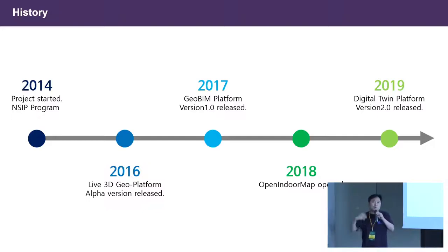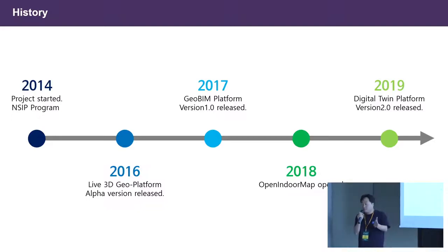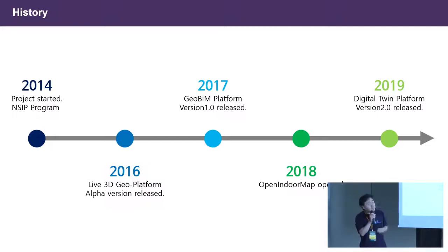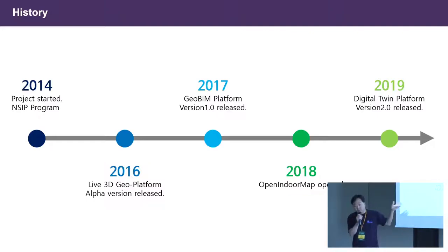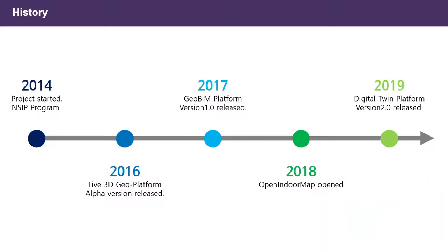The Korean government wanted to integrate building information modeling and 3D GIS on a single platform. So they pushed us to integrate building information modeling and 3D GIS in the web browser. In 2017, when we released the first version of Mago 3D, it was a GeoBeam platform — meaning we can integrate building information modeling and IFC on top of 3D GIS.